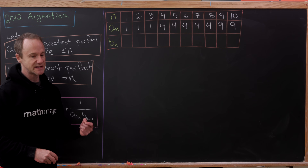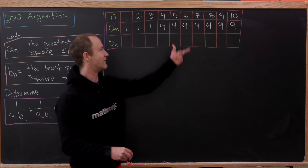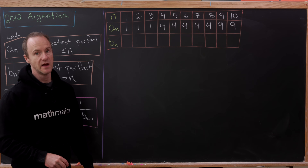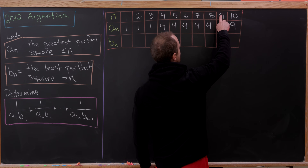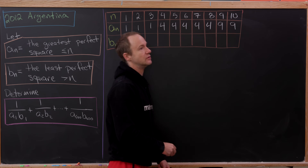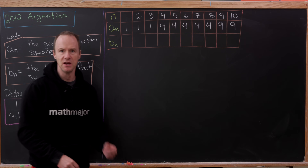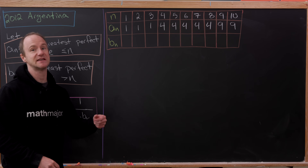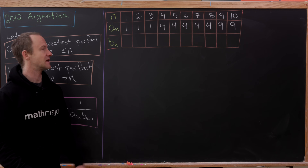It's interesting that we get 3 repetitions of 1, 5 repetitions of 4, and 7 repetitions of 9 (from 9 up to 16). So it looks like we're getting repetitions as consecutive odd numbers — that's interesting to think about.